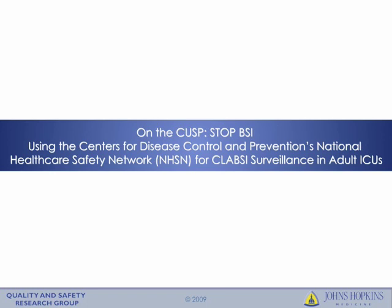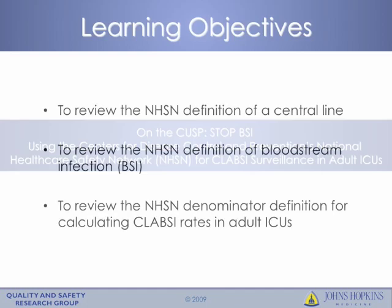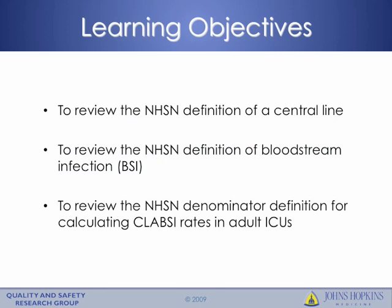The purpose of this module is to review the use of the Centers for Disease Control and Prevention's National Healthcare Safety Network for CLABSI surveillance in adult ICUs. The National Healthcare Safety Network is usually abbreviated NHSN, and that's how I will refer to it in the rest of this module. The learning objectives are to review the NHSN definition of a central line, the NHSN definition of a bloodstream infection (abbreviated BSI), and the NHSN denominator definition for calculating central line associated bloodstream rates in adult ICUs. For the rest of the module, I will be referring to central line associated bloodstream infections as CLABSIs.